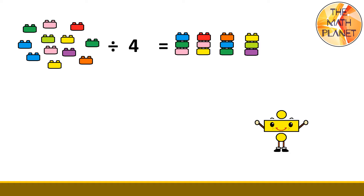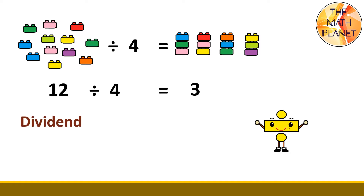So, we can write the division equation as follows: 12 divided by 4 equals 3. In this division equation, there are special names for each number. First, the dividend is the number that we are dividing up. This is usually the biggest number in the division equation, because we usually start with a big amount and then divide it into smaller groups.